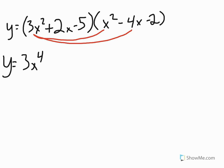And then I take the 3x squared times negative 4x, and 3 times negative 4 gives me negative 12x cubed. And then I'm going to do the 3x squared times the negative 2. So 3 times negative 2 gives me the negative 6, and then since there's not anything to multiply the x squared by, it's just negative 6x squared.